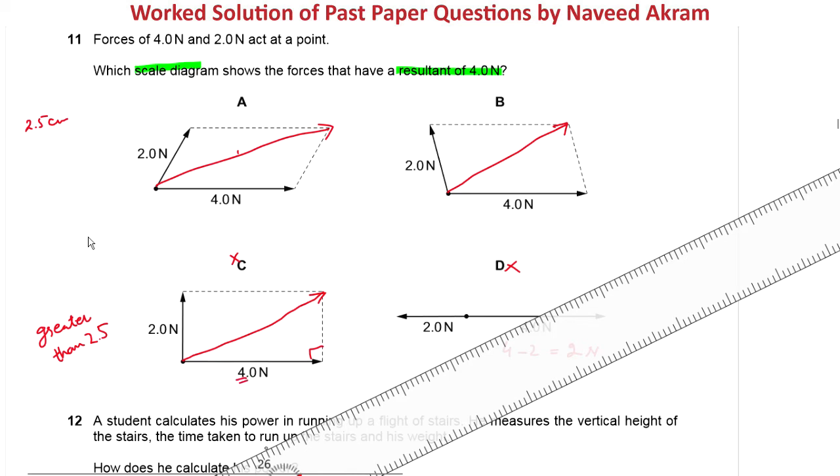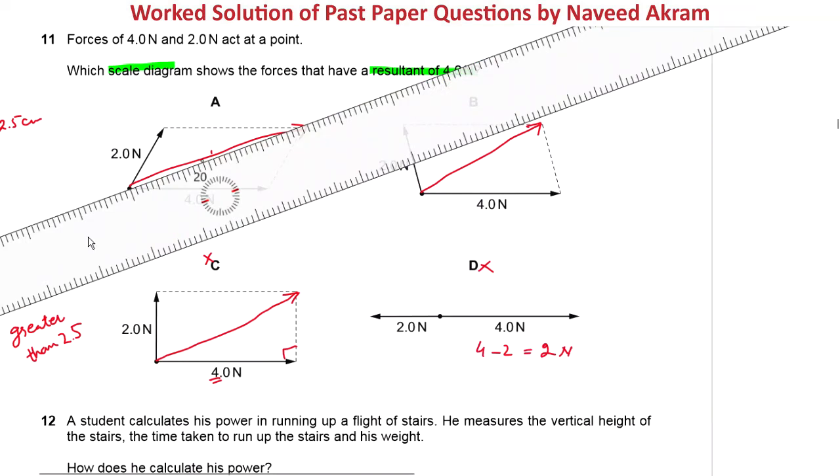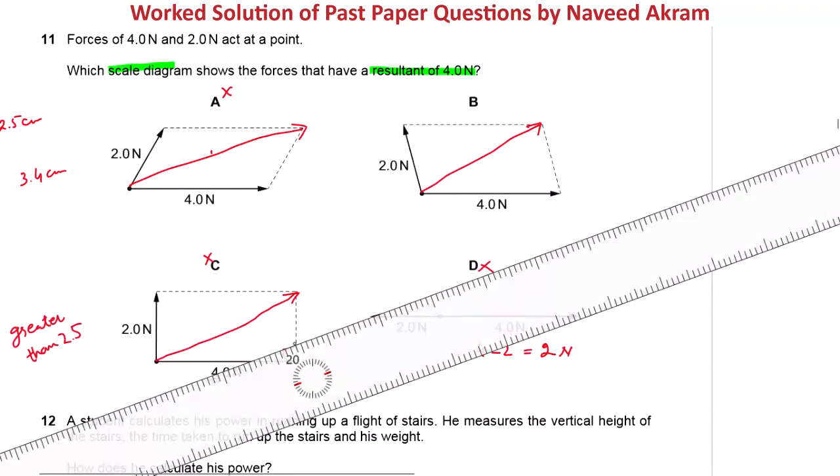Clearly the length of this resultant vector would be greater than 2 Newton and will be greater than 4 Newton. Now let's check option A. In case of option A it is 3.4 centimeter, which is greater than 2.5 centimeter, so A is also not our answer.